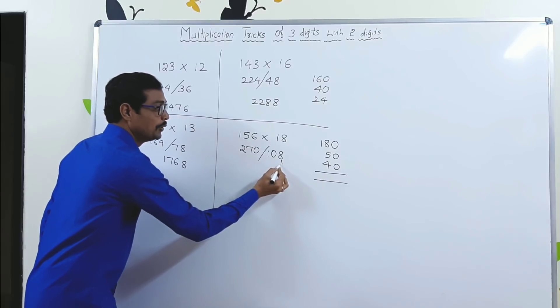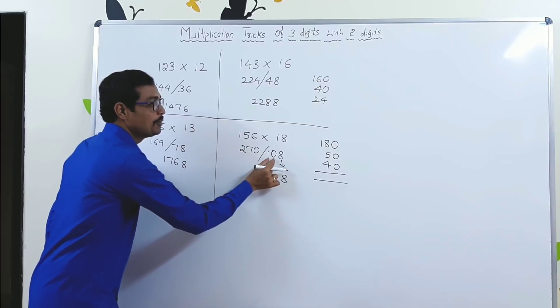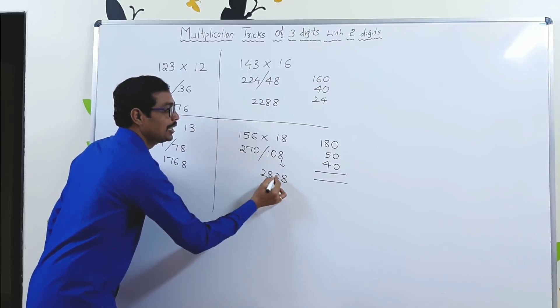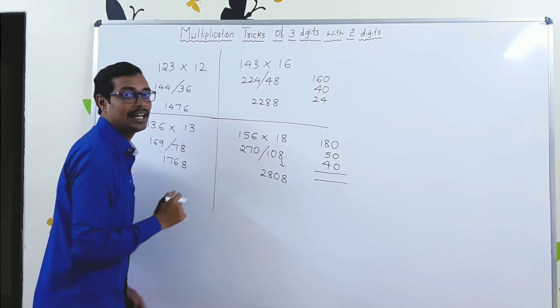Now, only write the unit digit as 8. 270 plus 10 is 280. So, your answer, 2808.